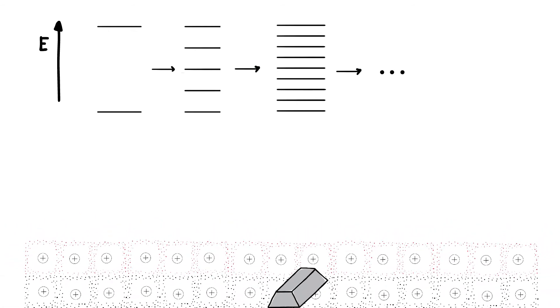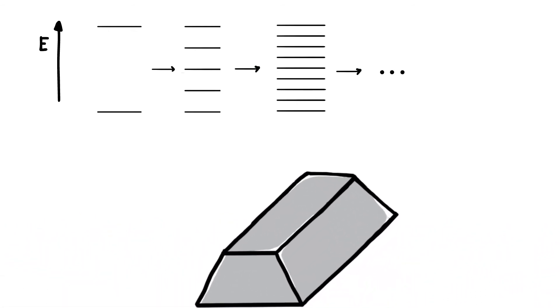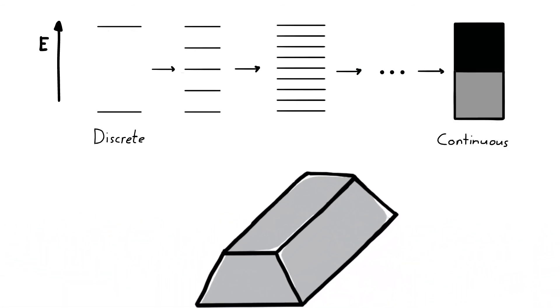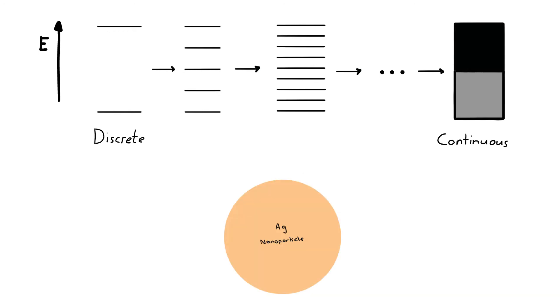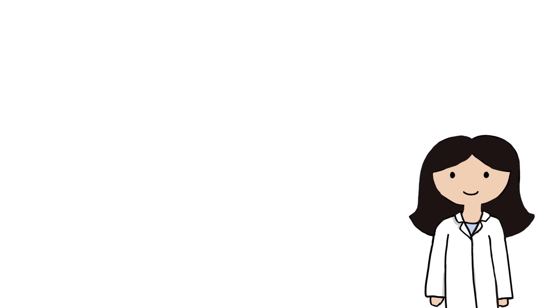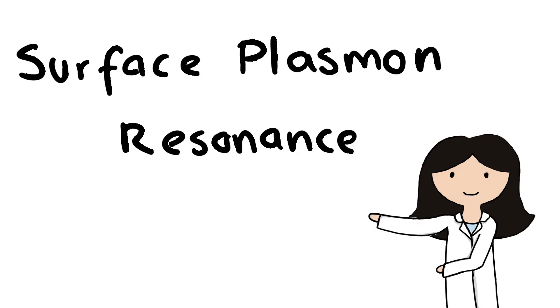In a bulk metal, there are so many energy levels available that we essentially have a continuous band of energy levels, called the conduction band, whereas in a nanoparticle, we get something in between. Armed with these two facts, we can explain surface plasmon resonance.